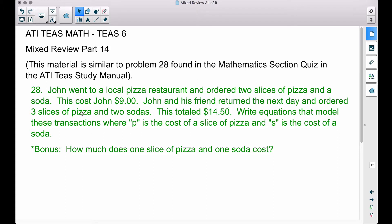John and his friend returned the next day and ordered three slices of pizza and two sodas. This totaled $14.50. Write equations that model these transactions where P is the cost of a slice of pizza and S is the cost of a soda.